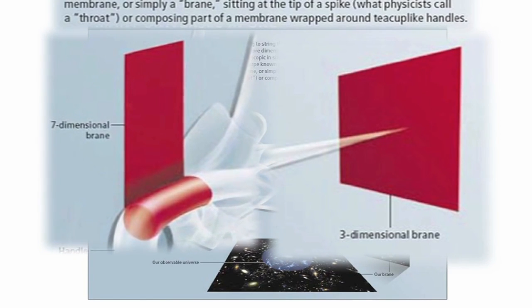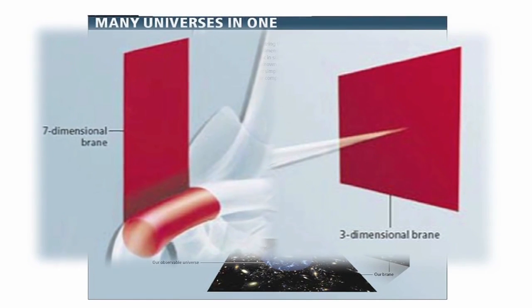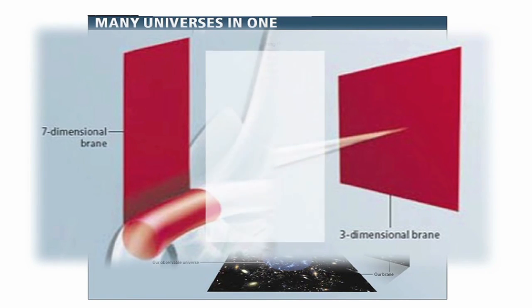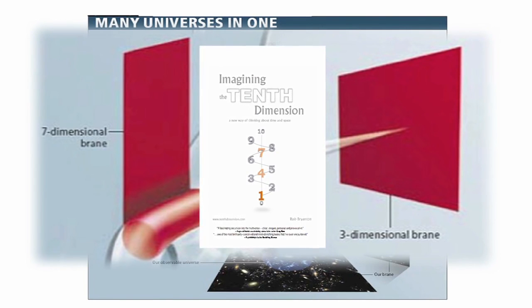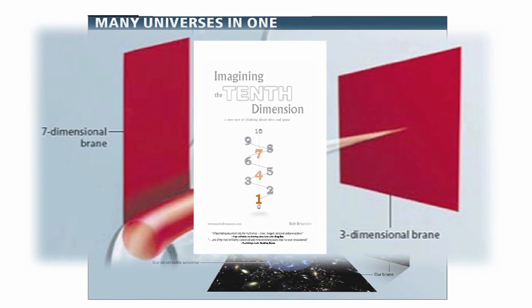As you can see in this graphic, these scientists propose that our universe is constrained by branes or membranes in the third dimension and the seventh dimension. When I published my book in 2006, did I know that string theory proposes this? I did not.